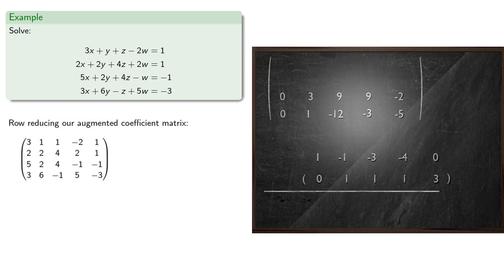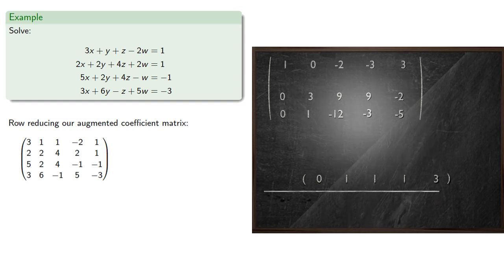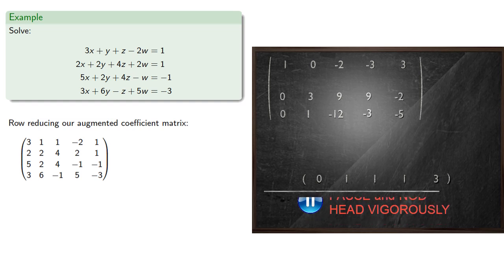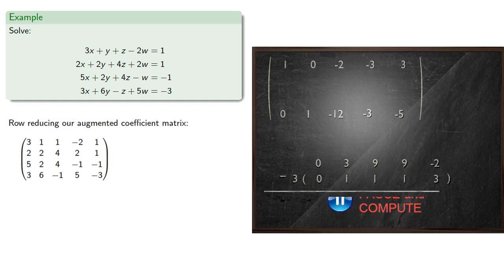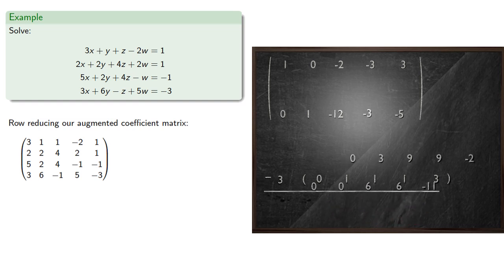And now our leading coefficient is 1, so we can use the second row as our pivot row. Now we can add it to the first row, subtract it three times from the third row, and subtract it once from the fourth row.